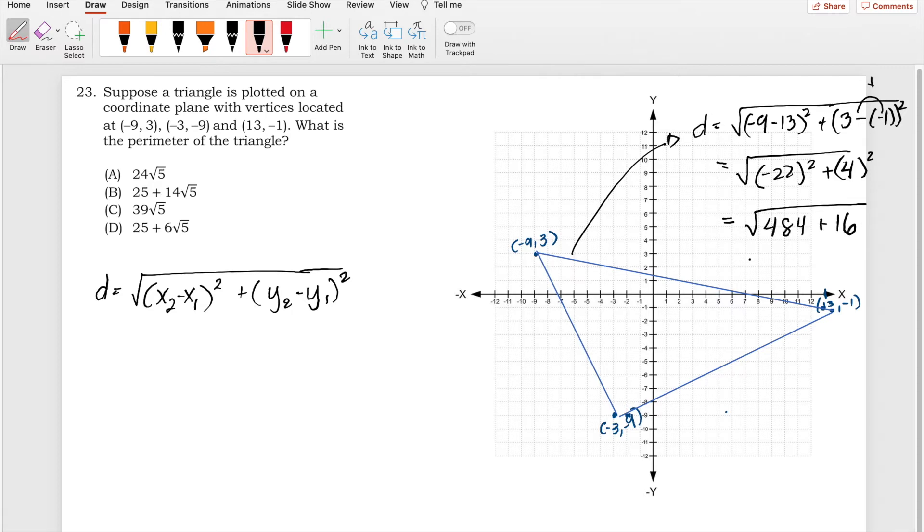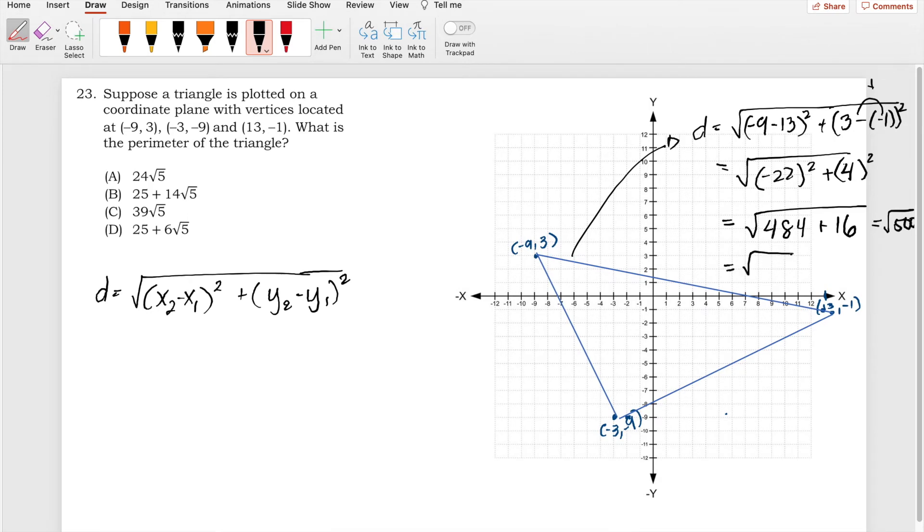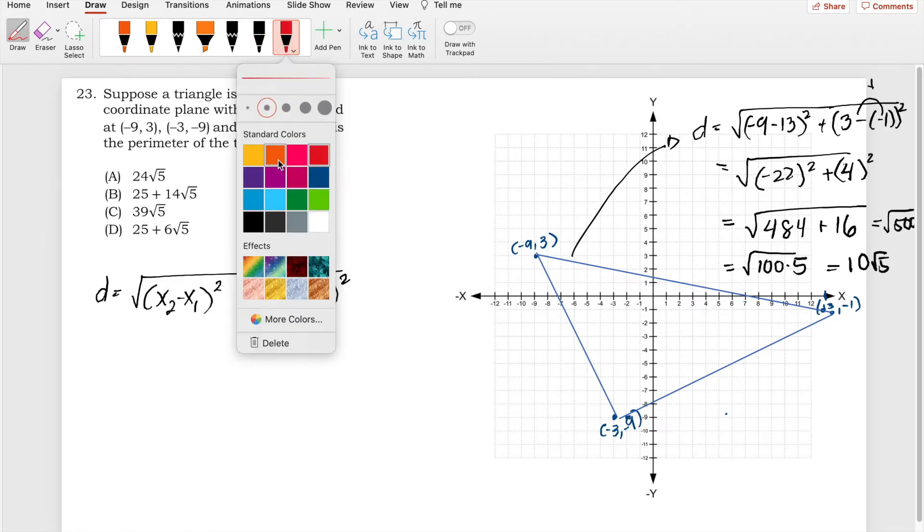So we will have these values, and that is square root of 500, which can be written as 100 times 5, or simply 10 times square root of 5.